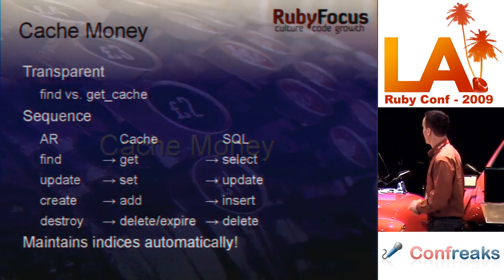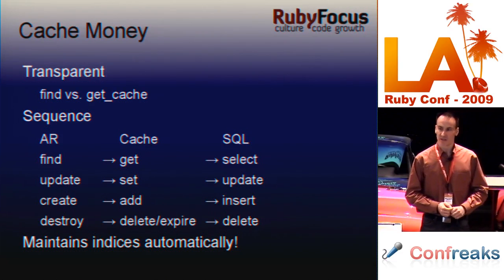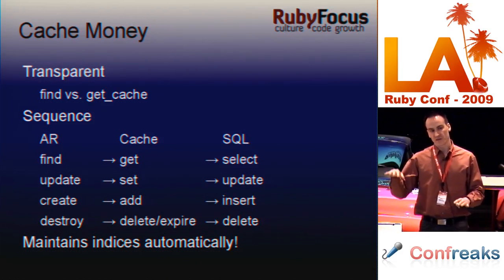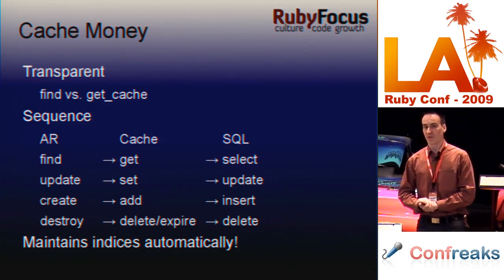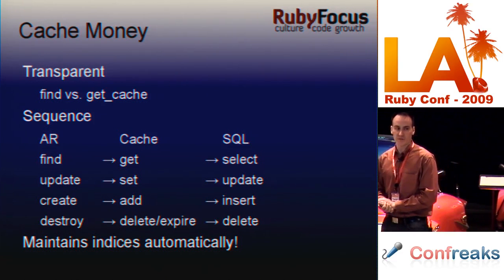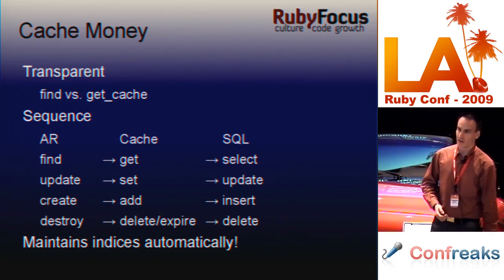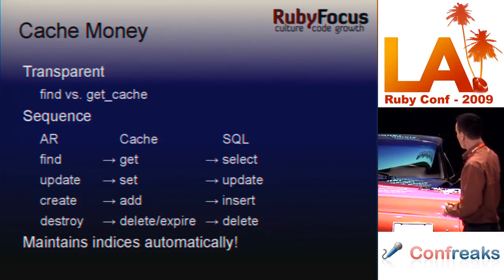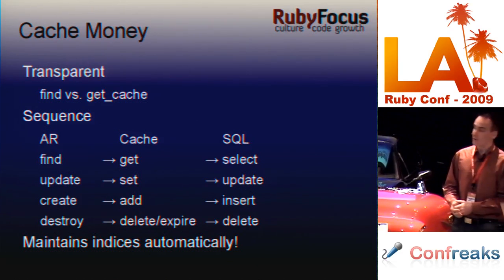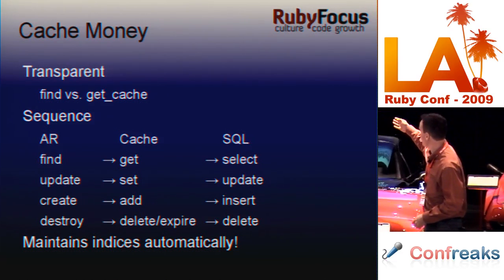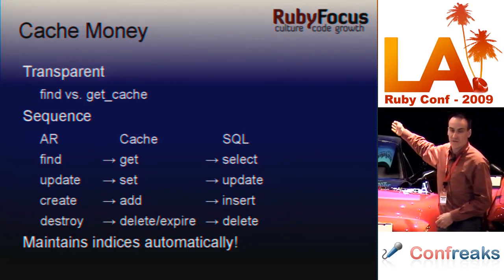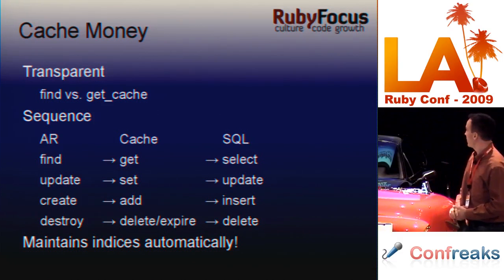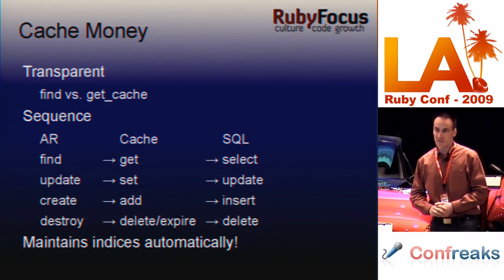What I like about cache_money is this: you can use find instead of get_cache explicitly. You say User.find(id) and the framework abstracts away whether it's in the database, whether it's in cache, whether it's expired — all of that. If all you ever do is single-model, single-object finds, you have a drop-in solution that will cache the entire application automatically. The way this works: on the left you have the Active Record method you call, such as find, update, or create. On the far right is what eventually happens at the database level — select, update, or insert. Cache_money sits in the middle. It either uses a get to retrieve from cache, or if it doesn't find it in cache, it goes to select and brings it back into cache.